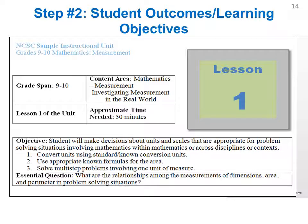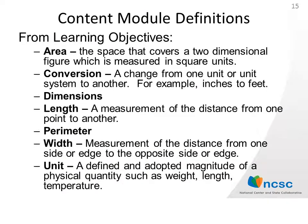In the high school instructional unit example, the student outcomes are to convert units using standard or known conversion units, use appropriate known formulas for area, and solve multi-step problems involving one unit of measure. Each unit also provides a vocabulary list — keywords used throughout the unit's lesson that will assist the teacher in locating the content module that best fits the vocabulary and concepts taught. If there is no content module for a concept, an internet search engine is recommended for additional clarifying information.